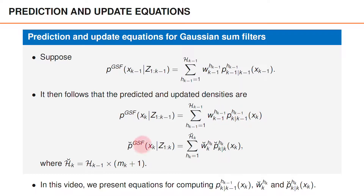One can also show that the posterior density at time k is a Gaussian mixture with updated weights and densities, and that we obtain m k-1 new hypotheses for every hypothesis at time k-1. The posterior before we introduce a new approximation is denoted with the tilde sign. In this video, we present the equations for the predicted density p k given k-1 for a given hypothesis, as well as the updated weights and densities.